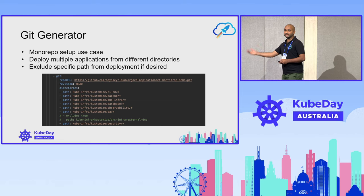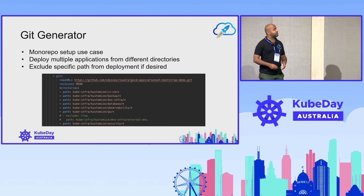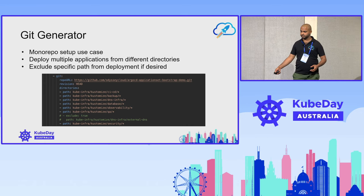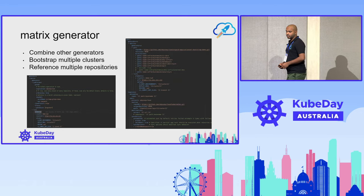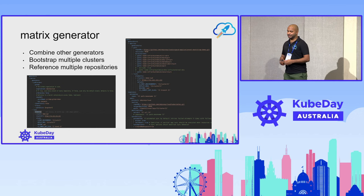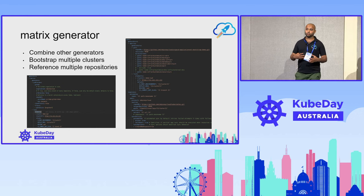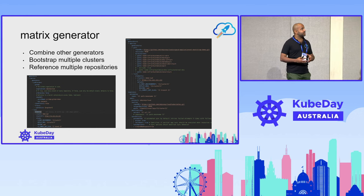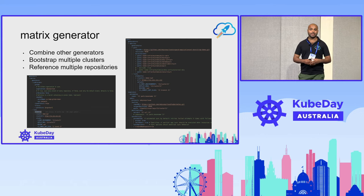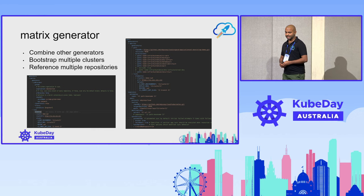Then you have the Git generator, which is for mono repos. If you have multiple applications within your setup, this is what you're going to leverage. And finally, the matrix generator combines two generators to form an extensive framework, helping you deploy multiple applications across multiple clusters.